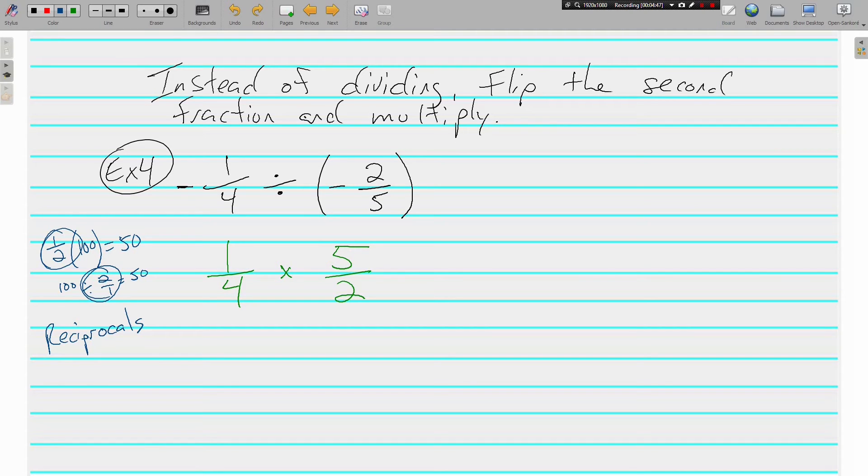Reciprocals are opposites, they're inverse. When you multiply reciprocals, they equal 1. Anyway, that's just a little bit of extra information. Flip and multiply. Can I reduce early here? Doesn't look like it. So 1 times 5 is 5 and 4 times 2 is 8. Negative 1 4th divided by negative 2 5ths is positive 5 8ths.